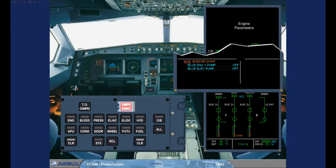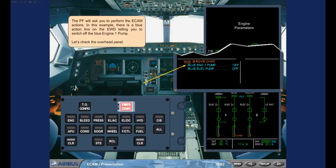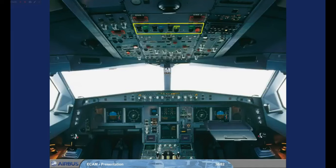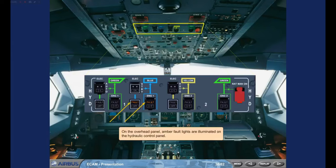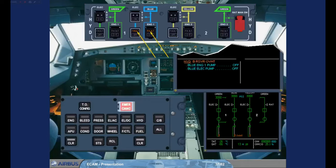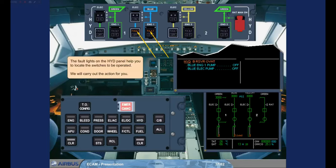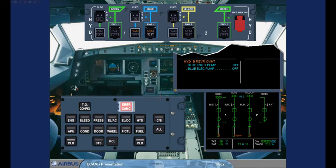The pilot flying will ask you to perform the ECAM actions. In this example, there is a blue action line on the Engine Warning Display telling you to switch off the blue engine 1 pump. Let's check the overhead panel. On the overhead panel, amber fault lights are illuminated on the hydraulic control panel. The fault lights on the hydraulic panel help you to locate the switches to be operated. We will carry out the action for you.